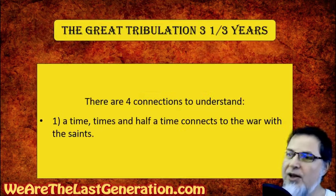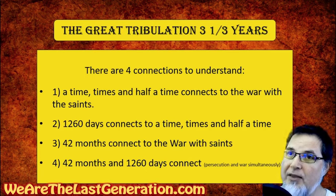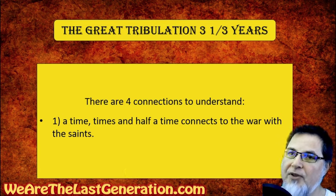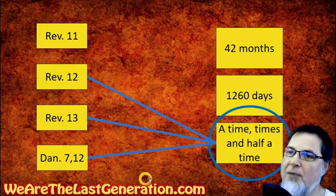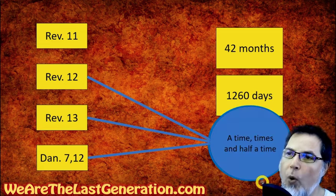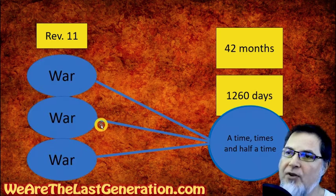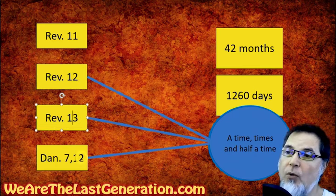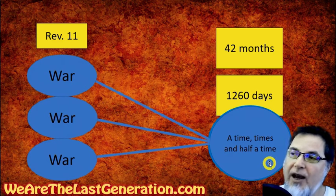Let's look at connection number one: a time, times, and half a time connected to the war with the saints. A time, times, and half a time in Daniel, and a time, times, and half a time in Revelation, connects to a war with the saints in Revelation chapters 12 and 13 — and so does Daniel 7 and Daniel 12. It's the same war. Chapter 12 talks about a war, chapter 13 talks about a war, and Daniel talks about a war — all connected to this phrase.